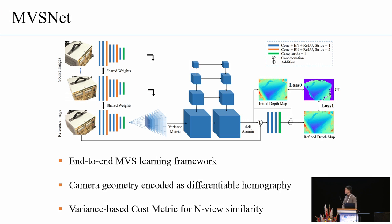So, to this end, we present an end-to-end deep learning architecture for multiview stereo reconstruction. And the proposed MVSnet will take multiview images as input and infers the depth map for the reference image. The camera geometries will be encoded as the differentiable homography warping in the network. And we design a variance-based cost metric to support arbitrary multiview input.